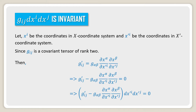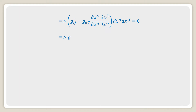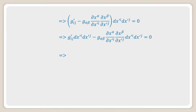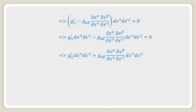Multiplying both sides by dx'^i and dx'^j, this implies z'_ij dx'^i dx'^j minus z_αβ (∂x^α / ∂x'^i)(∂x^β / ∂x'^j) dx'^i dx'^j equals zero, which implies z'_ij dx'^i dx'^j equals z_αβ (∂x^α / ∂x'^i)(∂x^β / ∂x'^j) dx'^i dx'^j.